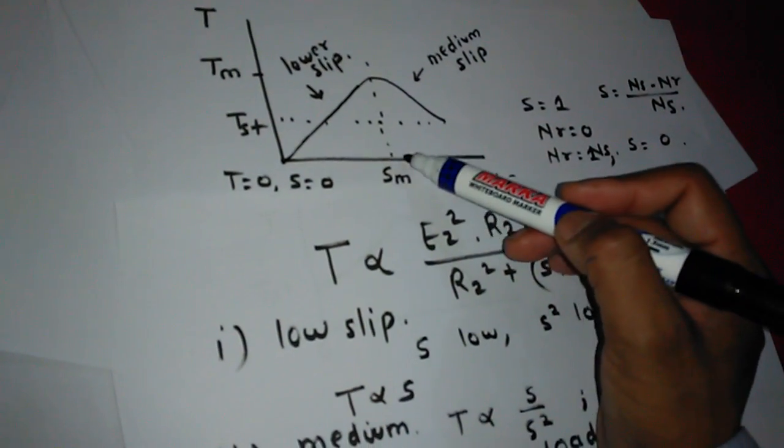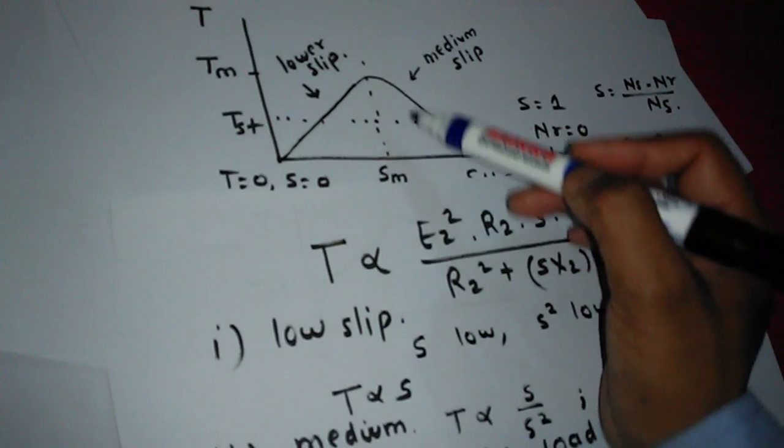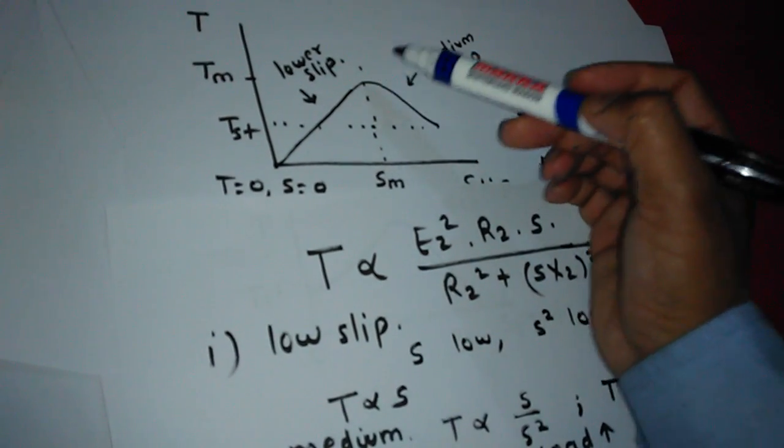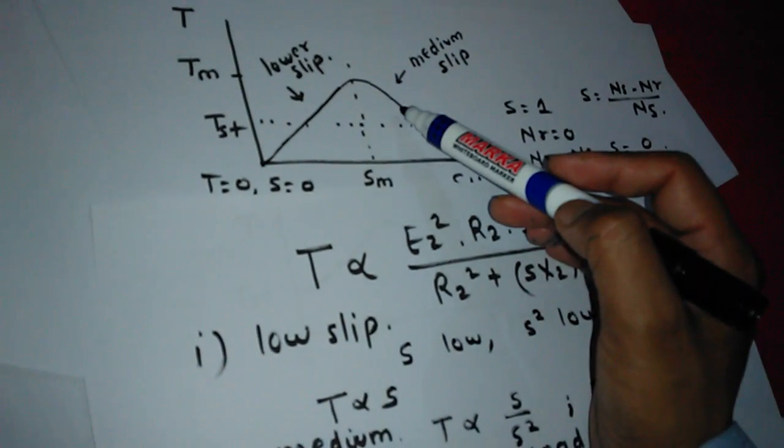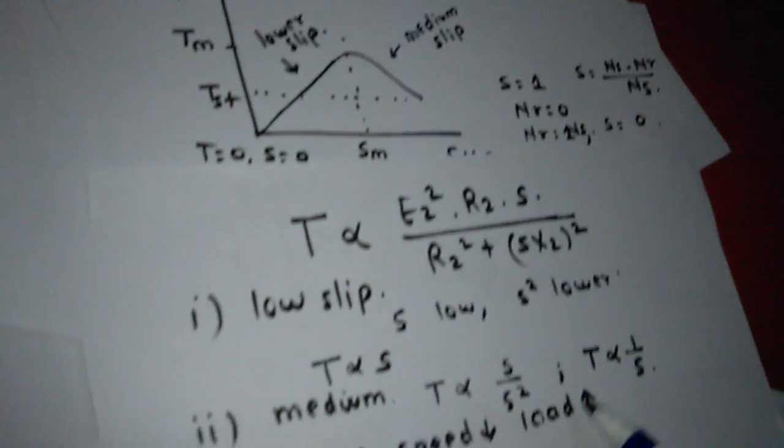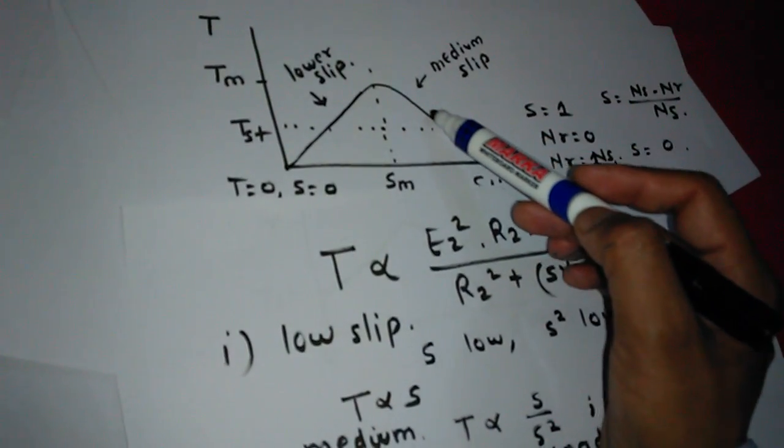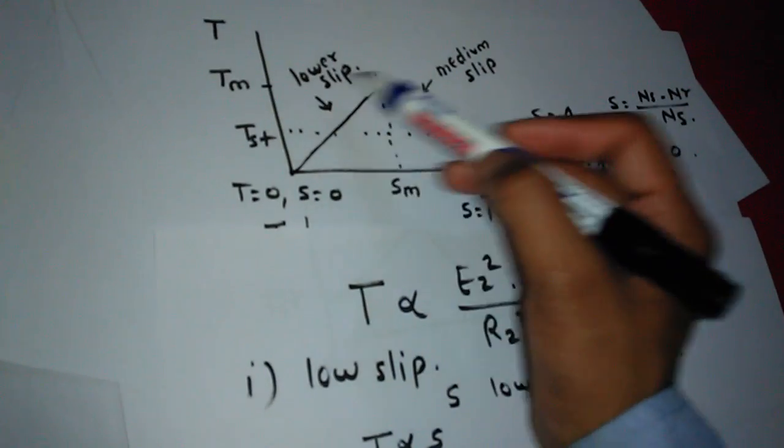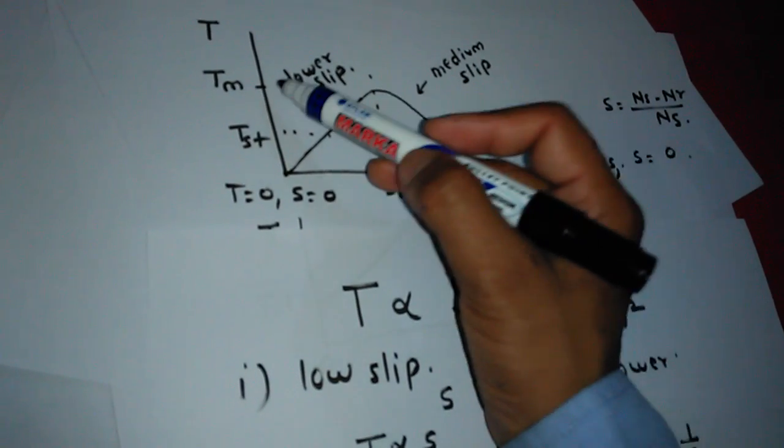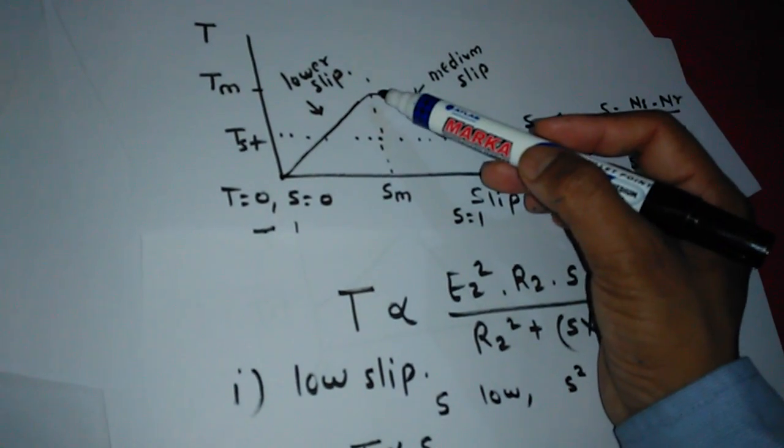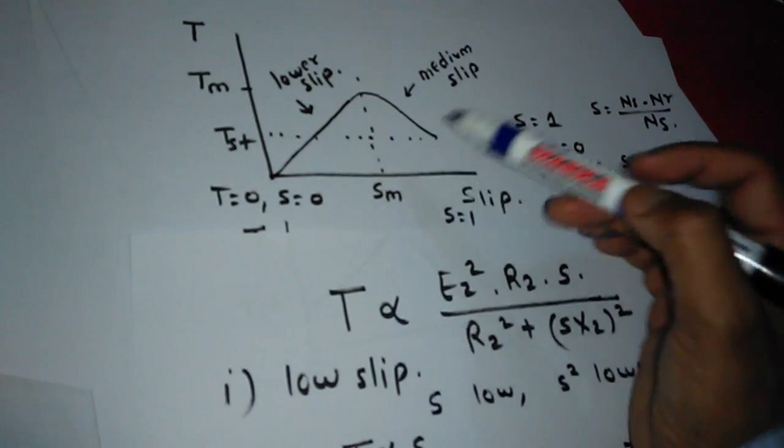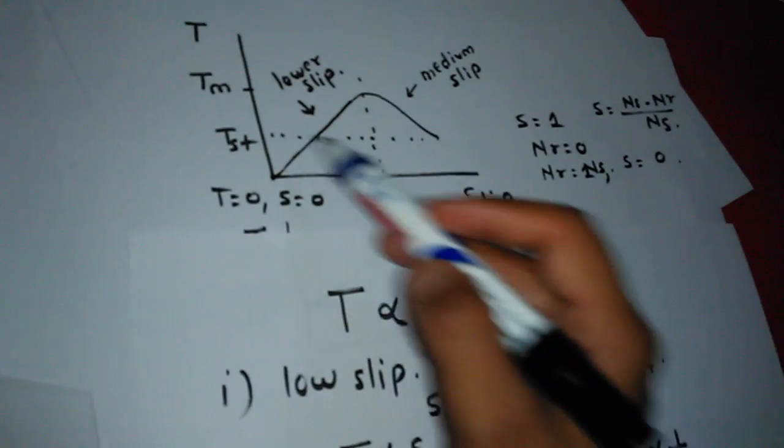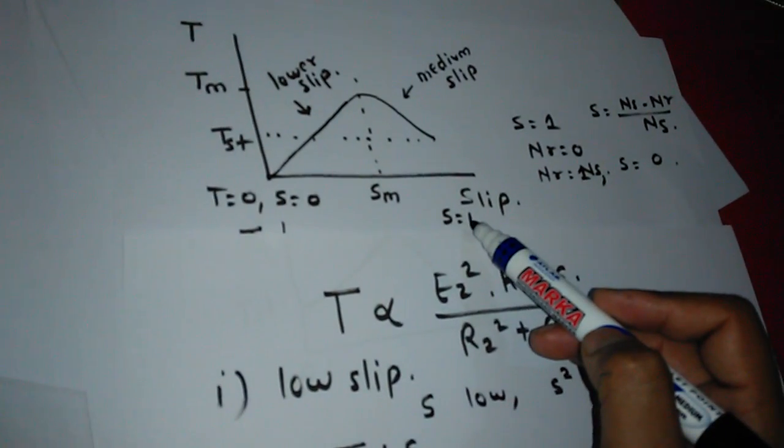After that, slip increases in medium slip region. There T is inversely proportional to S, so we have rectangular hyperbola characteristics. This is the torque-slip characteristics where the maximum position is the maximum torque. We can find the maximum slip, and this is the starting torque where S equals 1.